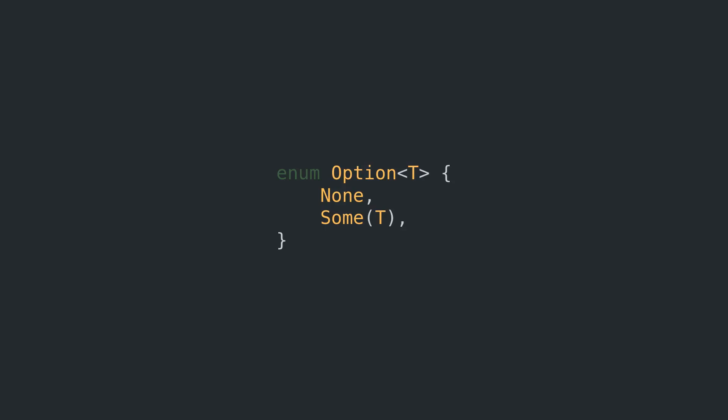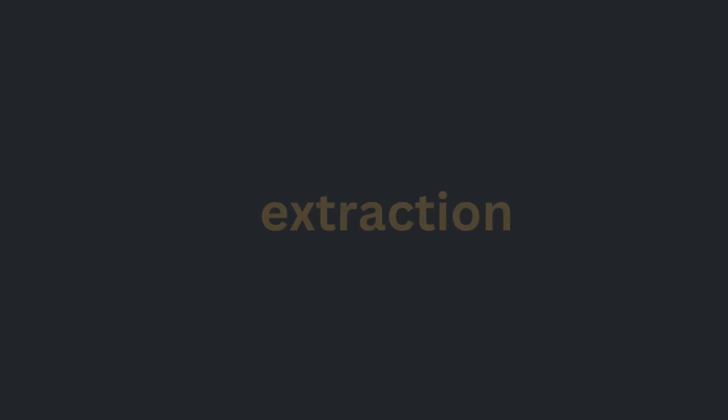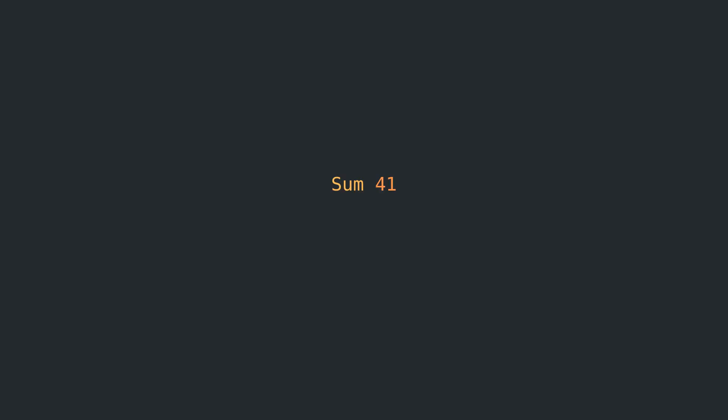I guess so far we've made no grave mistakes, so let's just keep going. To start out, we can define an option as the variant Some(41).